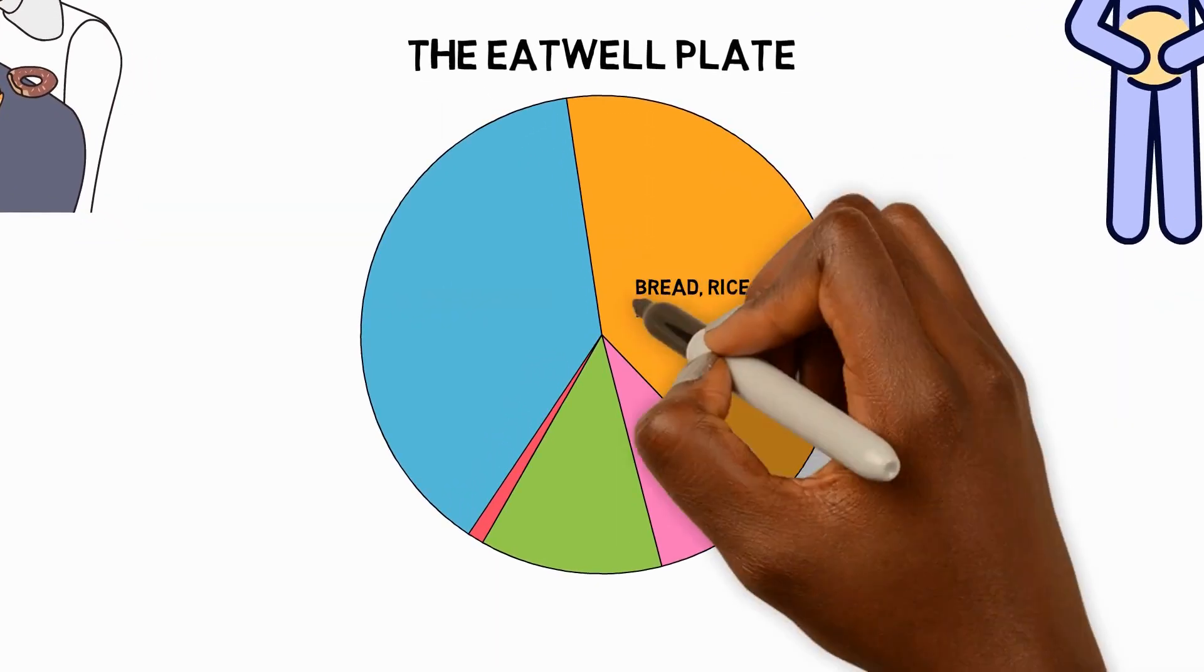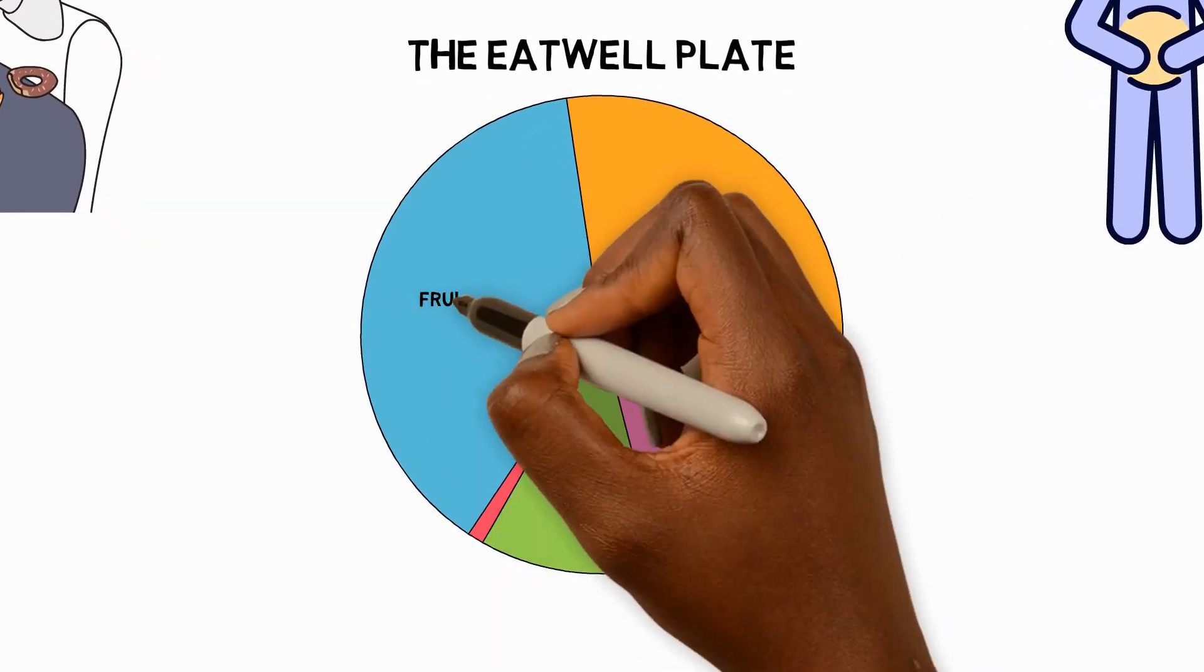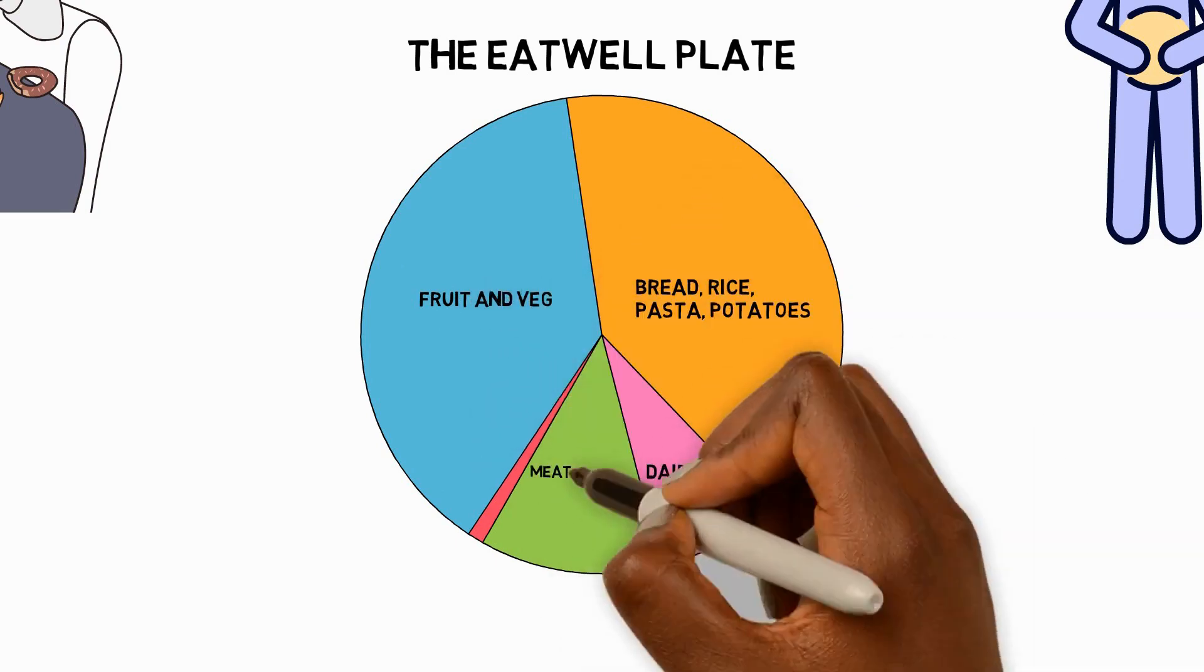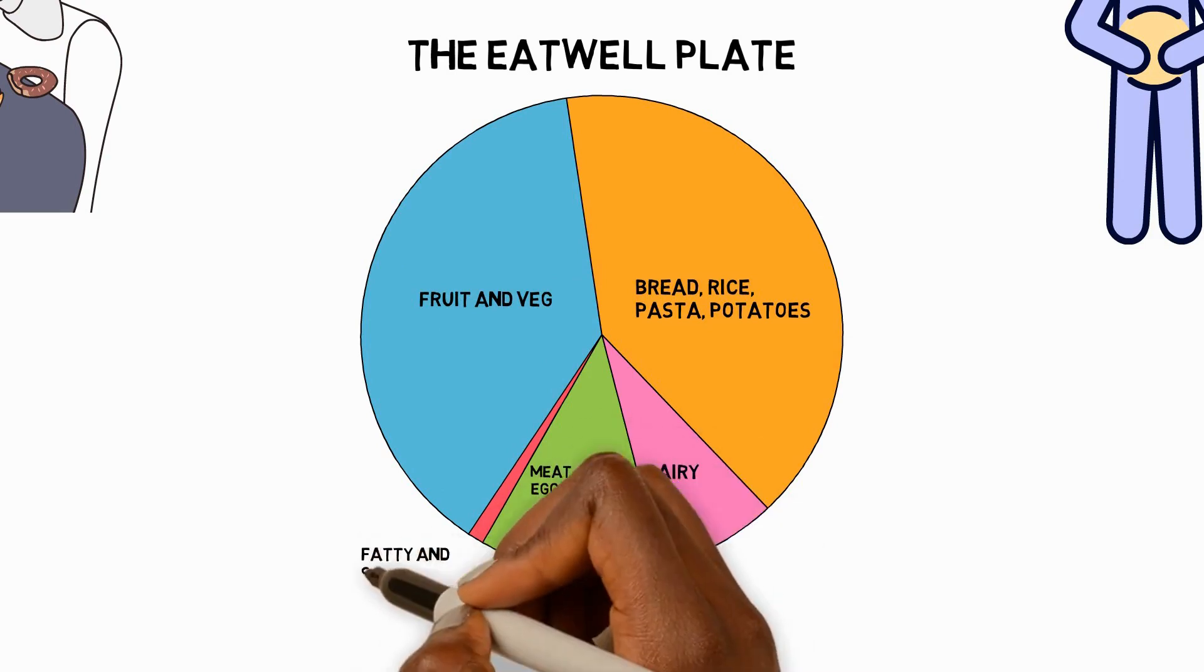It tells us that most of our food should come from carbohydrates, fruits and vegetables, with smaller amounts of dairy and occasional treats from fatty and sugary foods.